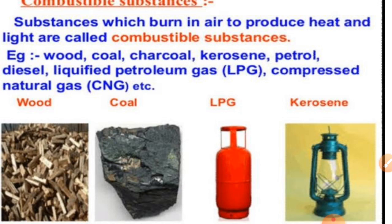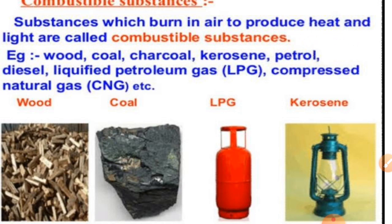Now let us understand what a combustible substance is. Combustible substances are those which burn in air to produce heat and light. For example, magnesium ribbon — when we burn it, it gives heat and light. Other examples include wood, charcoal, coal, kerosene, petrol, and LPG. These are all combustible substances because when we burn them, they give us heat and light.